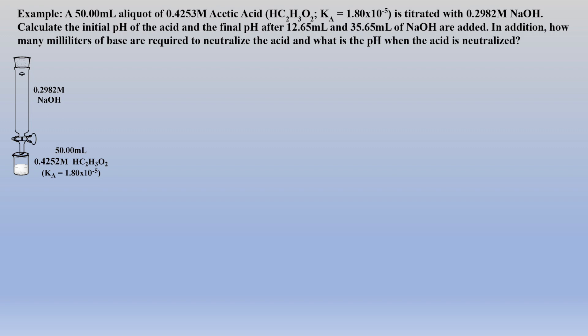It may help to first diagram the problem to assure you know what is given and what is being asked. Let's calculate the pH before any base is added. The first step is to write out the acid equilibrium, and it's a good idea to always write the Ka over the equilibrium arrows. The small Ka value indicates the acid does not fully dissociate. The equilibrium will lie to the left because the conjugate base is unstable, or high in energy, and therefore reactive — one could simply say it is a strong conjugate base. Thus, acetic acid is a weak acid.